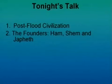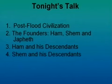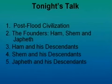We're looking at what happened after the flood. We're going to look at the founders of what I call the new world, because the old world, as they knew it, was pretty wrecked and they had to start again. So Ham, Shem, and Japheth, the sons of Noah — we'll look at Ham and his descendants, Shem and his descendants, Japheth and his descendants, and lastly we'll have a conclusion.